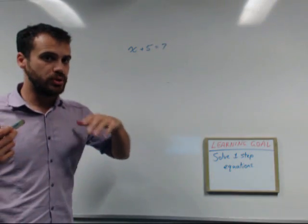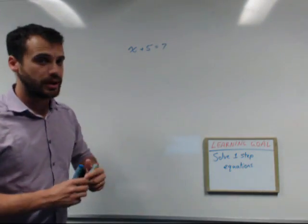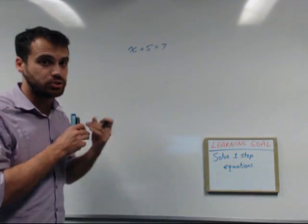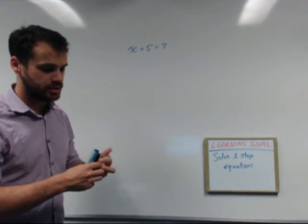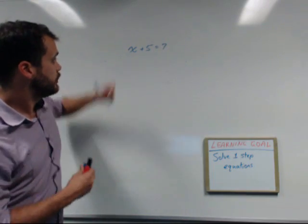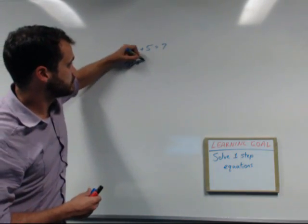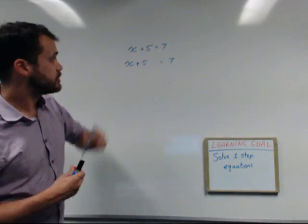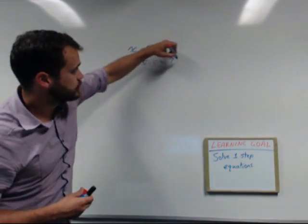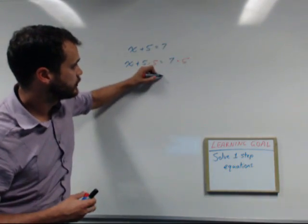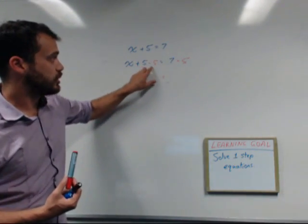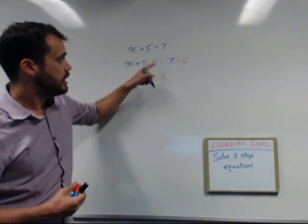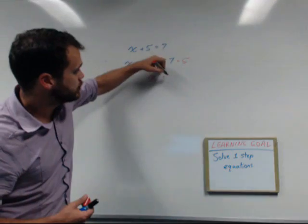Now I just want to move through this slowly so we can see what's happening. To get rid of that plus 5, what you do is subtract 5 from both sides. So it's going to look like x plus 5, but you're going to subtract 5 from both sides. Now that's going to be x plus 5 minus 5. They're going to cancel each other out, which is going to leave you with x. And x equals 7 minus 5, which is 2.